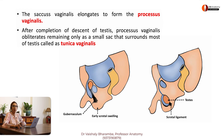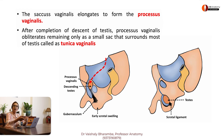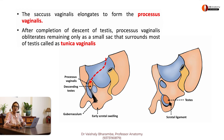This is your descending testes. In front of it, there is a fold of peritoneum leading the way. This fold of peritoneum which leads the way is called processus vaginalis, which is an elongation of saccus vaginalis. So testes is descending down — leading the way is a fold of peritoneum called processus vaginalis. You have to get that in your brain.